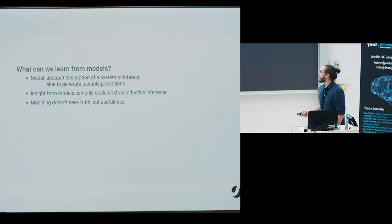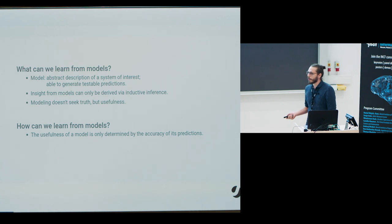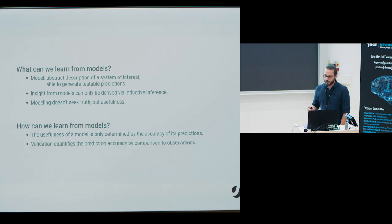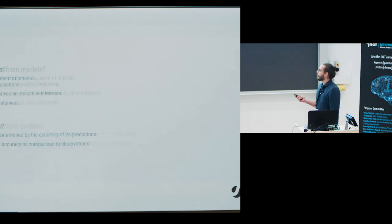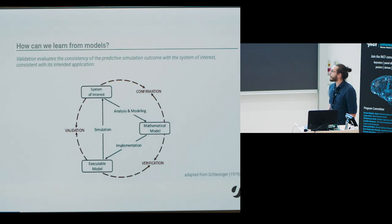But how can we find out about useful descriptions and how can we decide which is the most useful? This is exactly where validation comes in. Validation is a process of quantifiably evaluating the prediction accuracy with respect to the system of interest. But let's define it in a more broader modeling context.